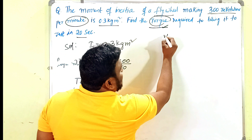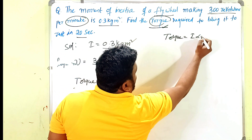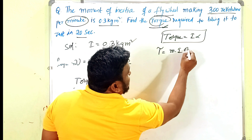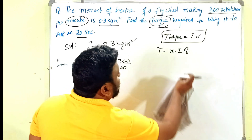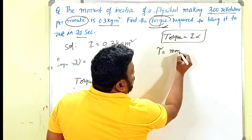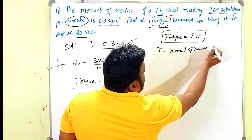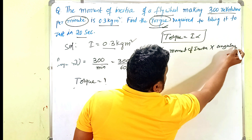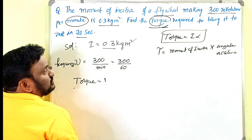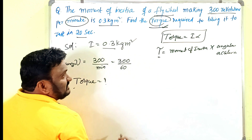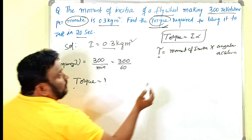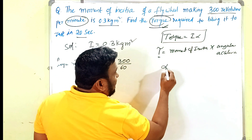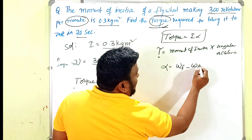We have the relation: torque τ = I × α, where I is the moment of inertia and α is the angular acceleration. Angular acceleration α = (ω_f − ω_i) / t, that is, the rate of change of angular velocity.